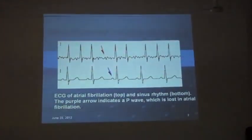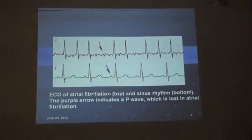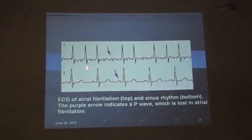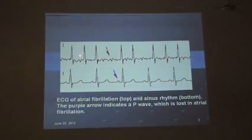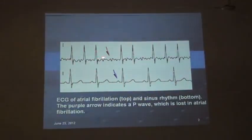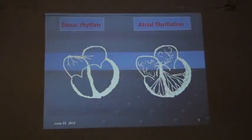Atrial fibrillation is the commonest arrhythmia you will encounter in your outdoor practice, in your intensive care practice, in your indoor ward, and in your surgical ward. Diagnosis: the pulse is very irregular. Even in the surgical ward, if you get an ECG which has a variable RR interval, you can more or less be sure it is atrial fibrillation. Post-surgically also, atrial fibrillation is one of the commonest arrhythmias.